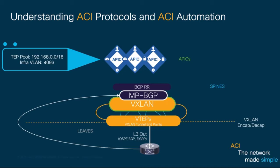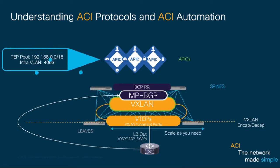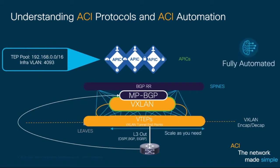Finally, if you need to grow in leaves or spines, ACI will do this automatically for you. So, although we will not need to configure any of these protocols ourselves, it is good to know all the work ACI is doing for you. Let's start adding some leaves and spines to our ACI fabric.